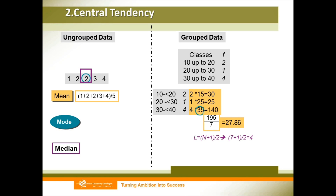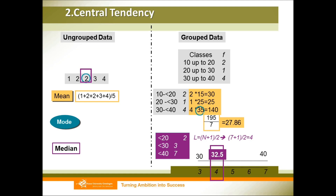We then convert the table into a cumulative frequency distribution: below 20 we have two numbers, below 30 we have three numbers in total, and below 40 we have seven numbers in total. From this we can find that position 3 has value 30 and position 7 has value 40. So what is position 4? That should be 32.5. For the calculation method, please refer to our class slides, lesson 3.